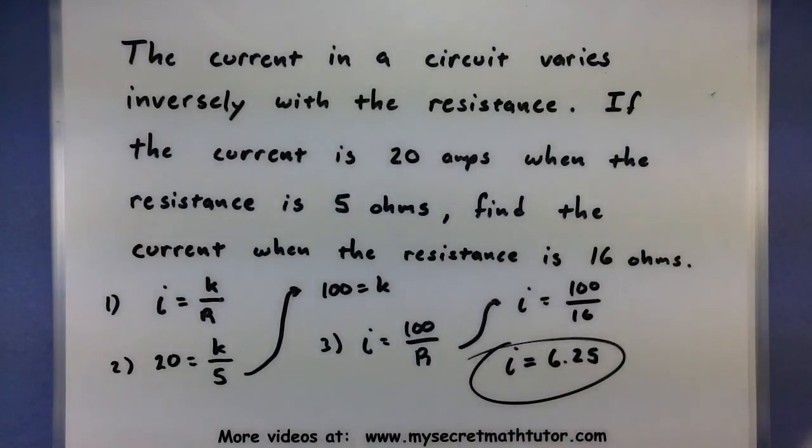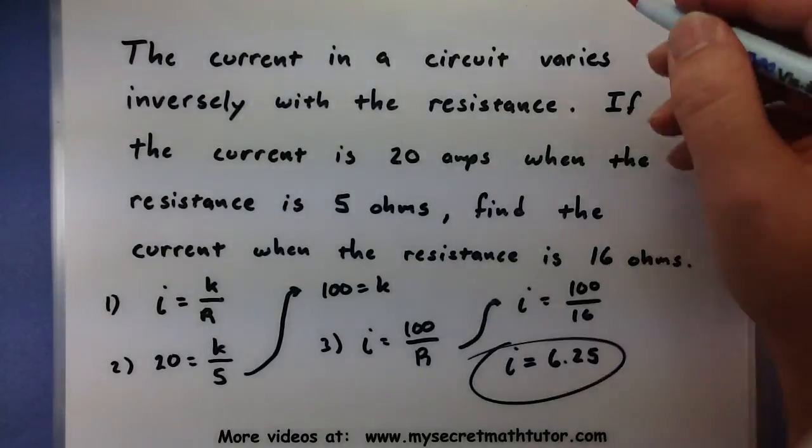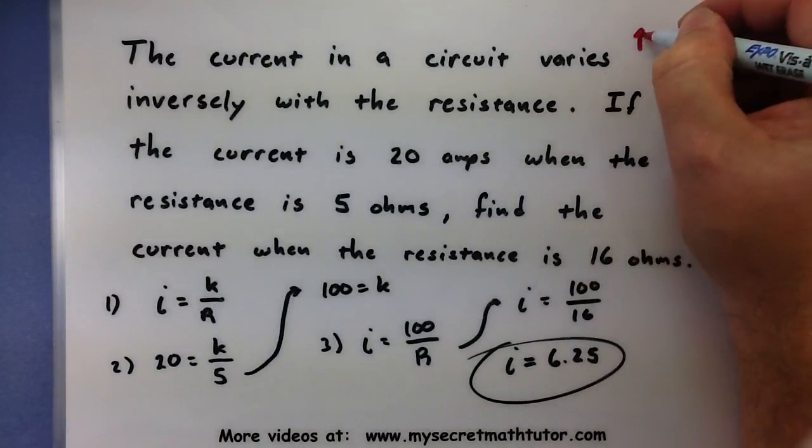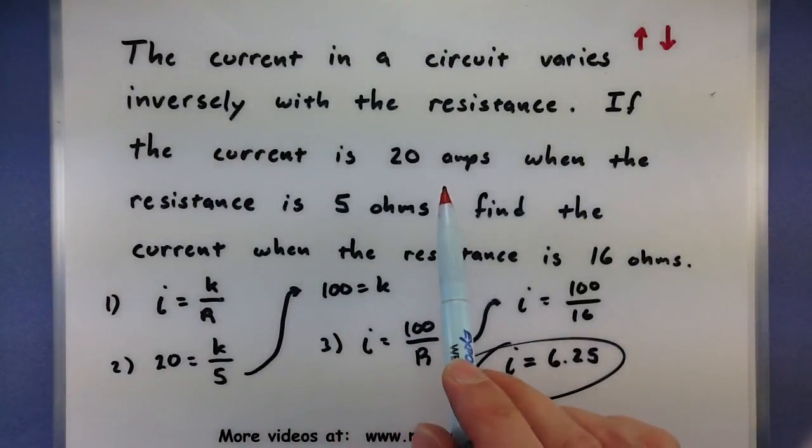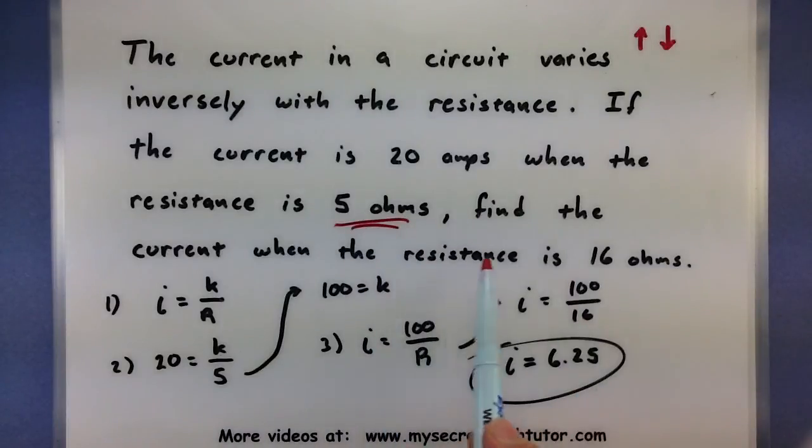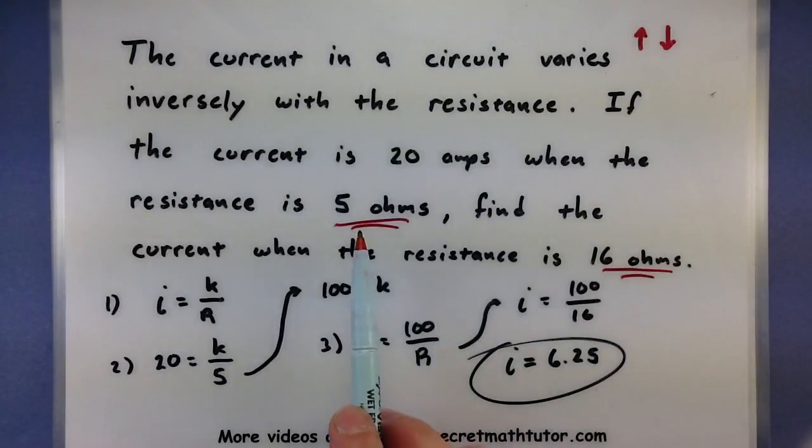Now some good intuition that you want to start picking up about these inverse variation problems is about how big the final answer should be. And to do that, kind of look at the change in your variables as you're going through here. Remember that in inverse variation problems, your variables are working in opposite directions. So the current is 20 amps when the resistance is 5 ohms. Then later on, it looks like the ohms got larger. So my resistance is increasing. That means the other variable should be decreasing.